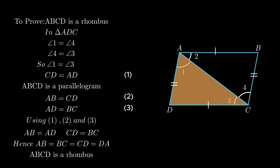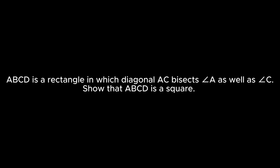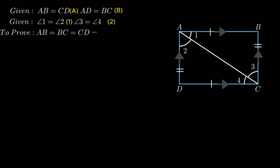The next problem states: ABCD is a rectangle in which diagonal AC bisects angle A and angle C. We need to show that ABCD is a square. Consider rectangle ABCD where AB is equal and parallel to CD, and AD is equal and parallel to BC. Also angle 1 = angle 2 and angle 3 = angle 4 from the given conditions. We need to prove all sides are equal.